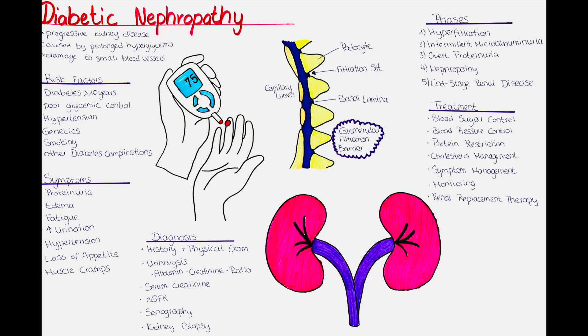Phase 4 is the decline in kidney function, or nephropathy. As diabetic nephropathy progresses, the kidney's ability to filter blood declines further, leading to a decrease in the glomerular filtration rate. This phase is marked by significant decline in kidney function and symptoms such as fatigue, weakness, anemia and electrolyte imbalances, which may become more pronounced. Patients also usually have a constantly high proteinuria with over 300 mg per liter. Symptoms such as foamy urine, edema and hypertension may become evident.